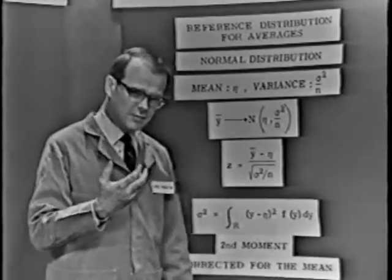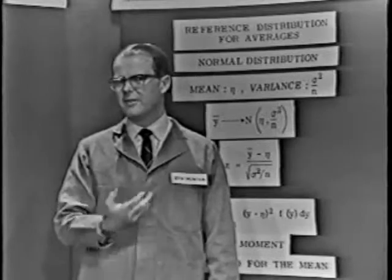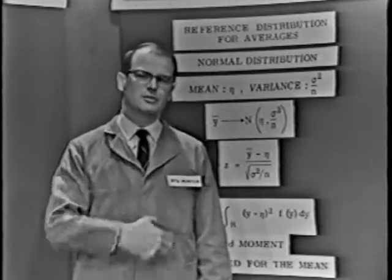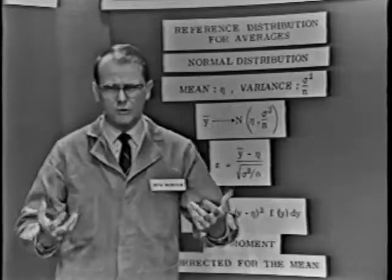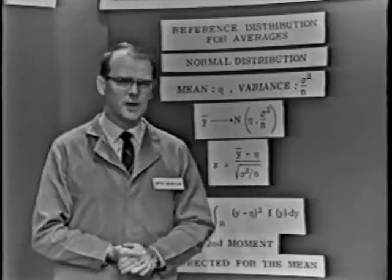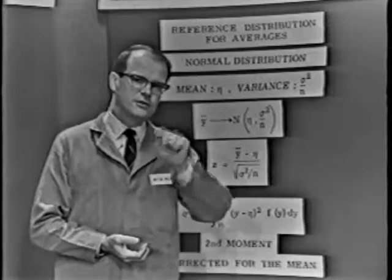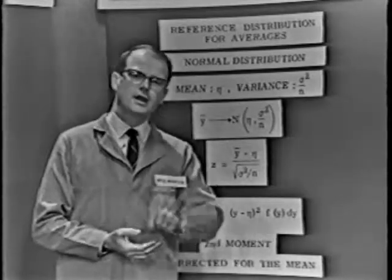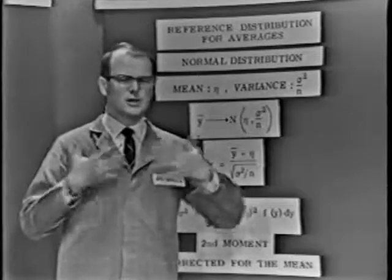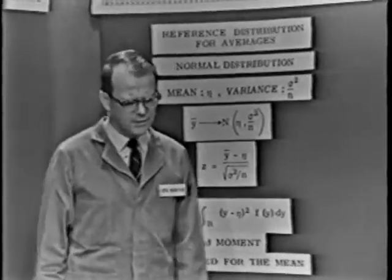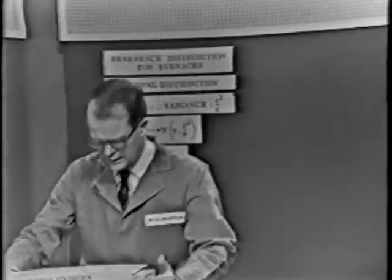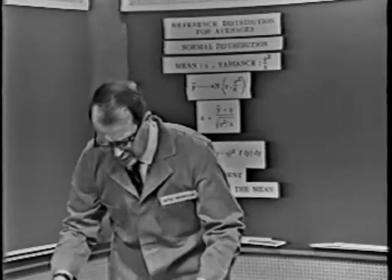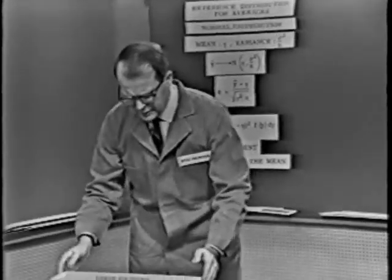So much for the variance of the observations. But what about the variance of the statistics that we construct from the observations? The average is only one of a whole host of statistics we could manufacture out of the observations. It's a statistic of a certain class — it's called a linear combination of the observations. I'd like to show you a linear combination of the observations and show you that the average is such a statistic. But to do this requires just a wee bit of algebra. Don't panic — it's not that difficult. Let's see a linear combination of the observations right away.